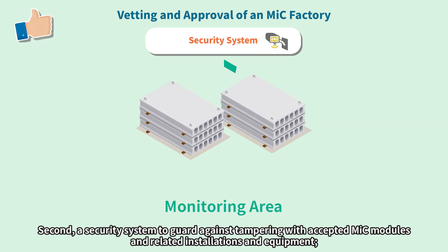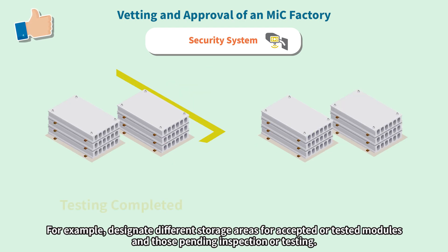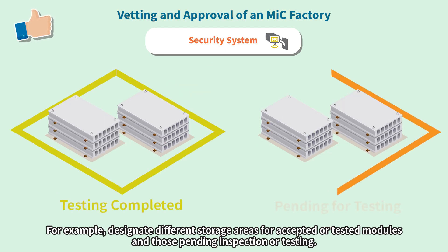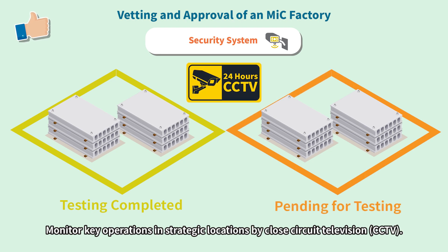Second, a security system to guard against tampering with accepted MIC modules and related installations and equipment. For example, designate different storage areas for accepted or tested modules and those pending inspection or testing. Monitor key operations in strategic locations by close-circuit television.